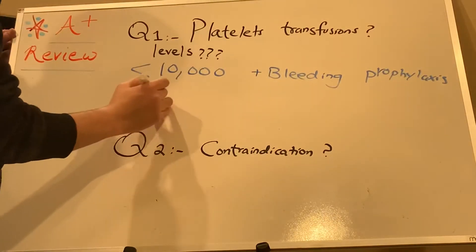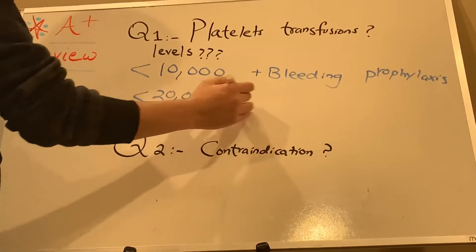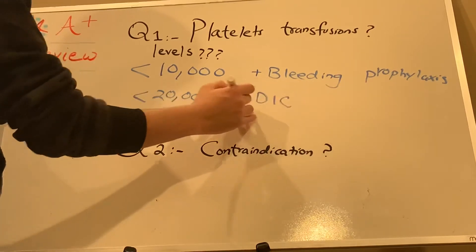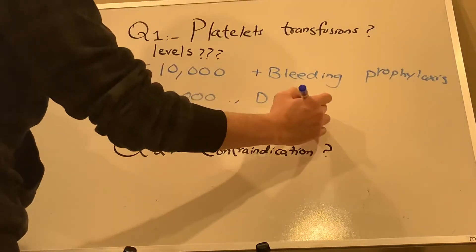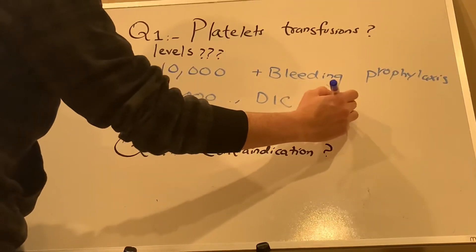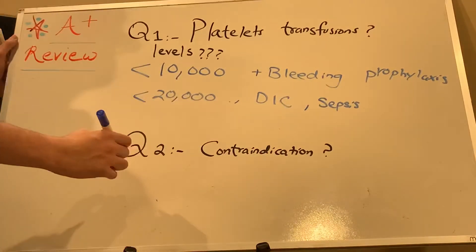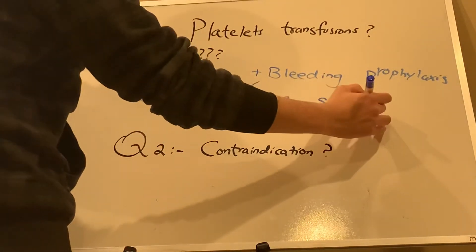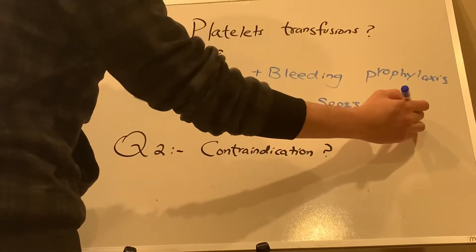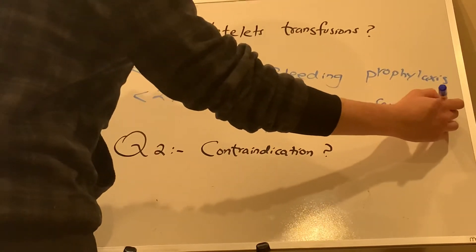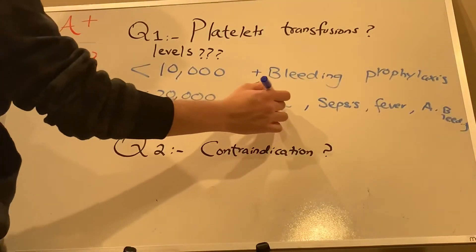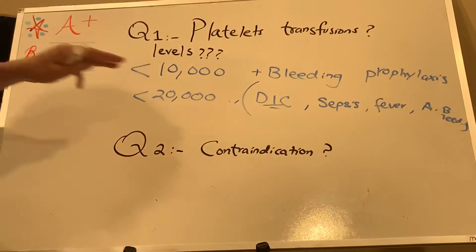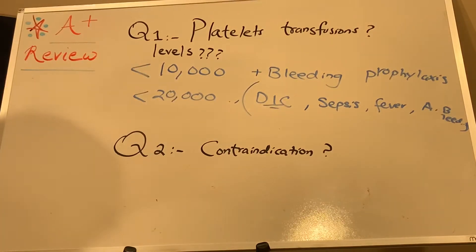Now, less than 20,000 with conditions like DIC — absolutely, you can add DIC, and with that you can add sepsis. With those two, you can also say fever or active bleeding. So basically, coagulopathy which includes sepsis and DIC, and then fever or active bleeding — this is highly important. With DIC, go with this level and transfuse the platelets.